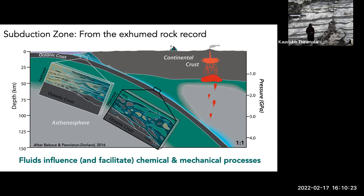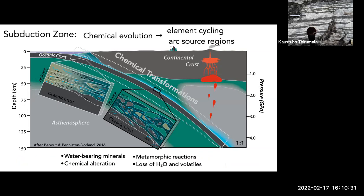Fluids along the plate interface are facilitating and influencing the chemical and mechanical properties happening here. When we think about chemical transformations along the plate interface, we know we have a lot of water-bearing minerals — minerals with water in their crystalline structure — and a lot of metamorphic reactions happening. We see evidence for chemical alteration or metasomatism. As the oceanic lithosphere subducts, it heats up, and we lose some of those mineral-bound water groups as those hydrous minerals break down, releasing water and volatiles.